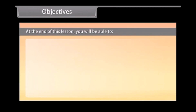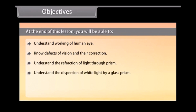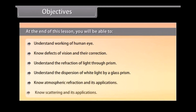At the end of this lesson, you will be able to understand the working of the human eye and defects of vision and their correction, understand the refraction of light through a prism, understand the dispersion of white light by a glass prism, know atmospheric refraction and its applications, and know scattering and its applications.